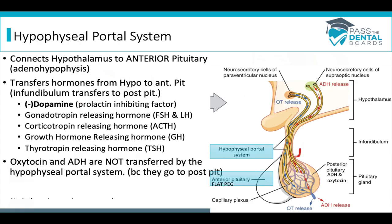Now we'll talk about the hypophysial portal system, sometimes called the hypothalamic hypophysial portal system. This is a blood network that connects the hypothalamus to the pituitary gland — more specifically to the anterior pituitary gland. The infundibulum connects the hypothalamus to the posterior pituitary, whereas the hypophysial portal system connects to the anterior pituitary gland.